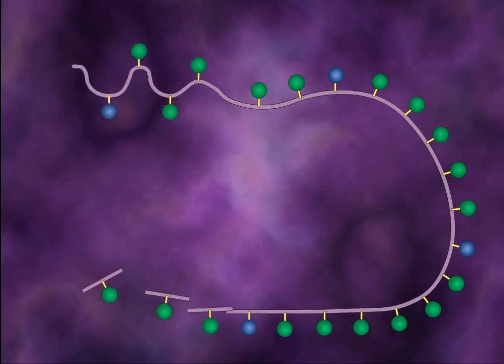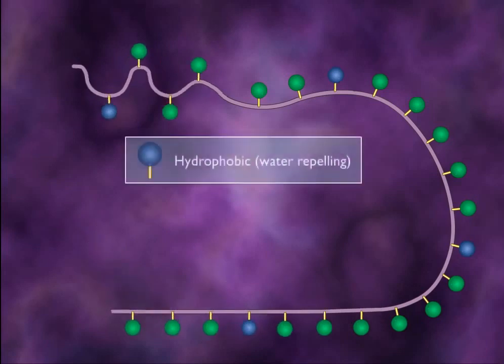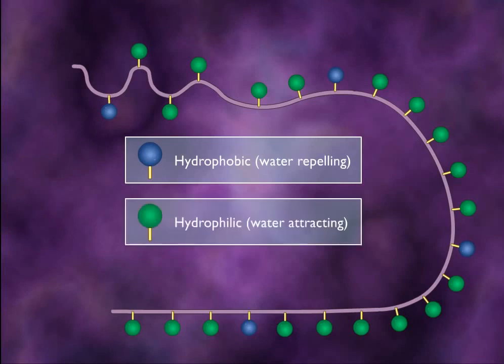These long chains of polymerized amino acids have hydrophobic, water-repelling, and hydrophilic, water-attracting, projections that are oriented perpendicular to the chain, as shown in this illustration of a growing protein chain.